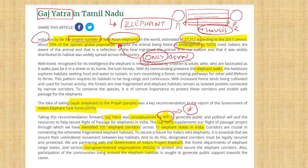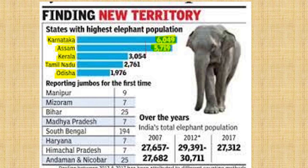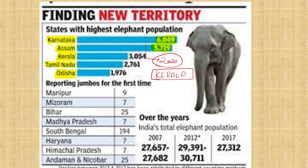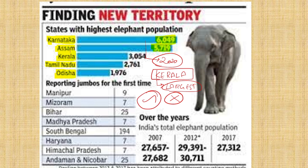UPSC may say 'only India has Asian elephants,' but that is not correct — India has the largest number, not the only population. This was tested in the 2020 preliminary examination. They gave four statements about elephants and one said Kerala has the largest number of elephants — that is wrong. The correct order of states with the highest elephant population is: Karnataka first, Assam second, Kerala third, and Tamil Nadu fourth.